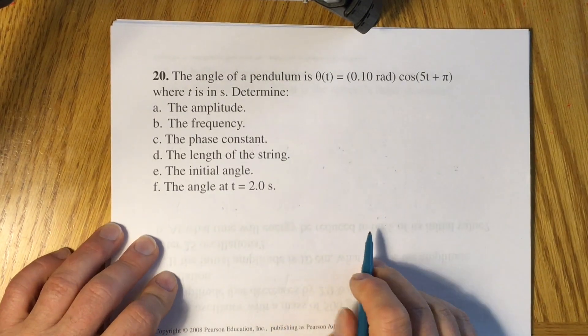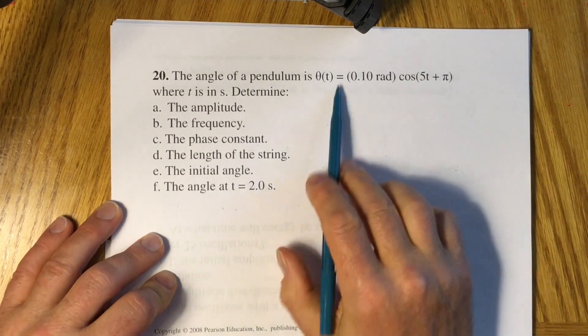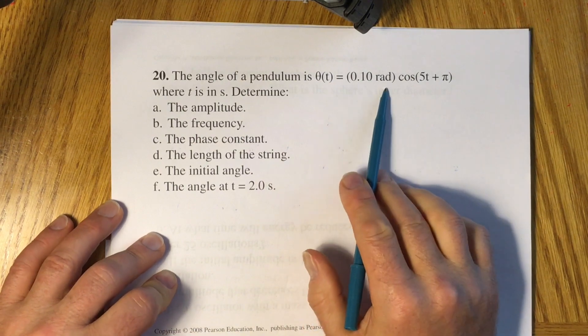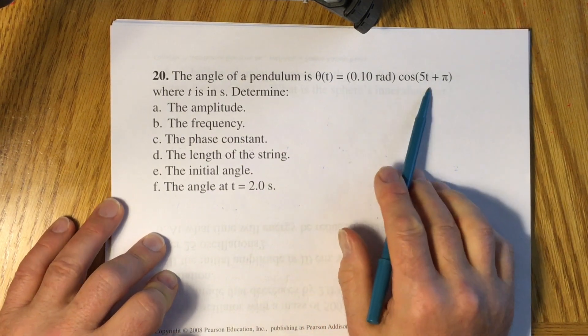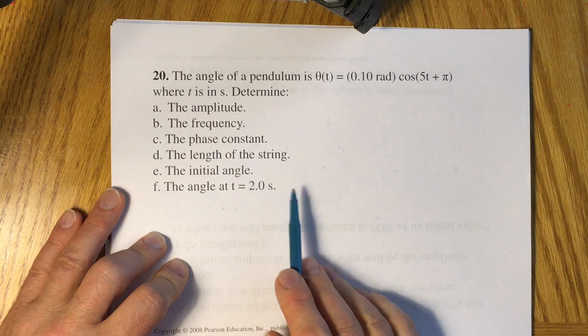Problem number 20. The angle of the pendulum is theta of t equals 0.1 radians times cosine of 5t plus pi, where t is in seconds.